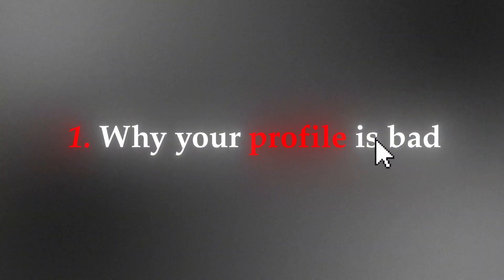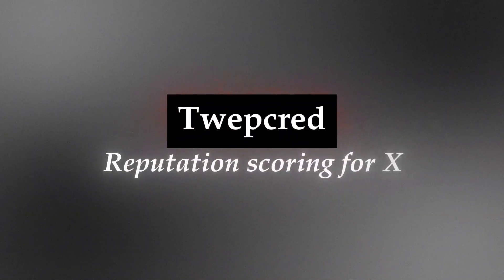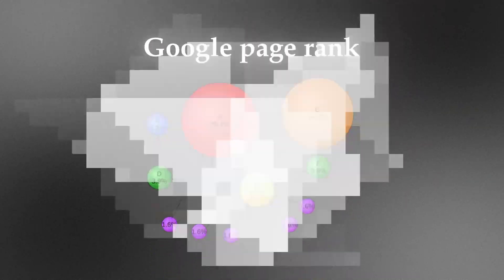The first step is why your profile is bad. Why do some tweets do better? Anyone that's posted has probably seen someone's tweet and thought if I posted that it probably wouldn't get the same engagement. You're not crazy — there is some truth to this. There's something called TweetCred, which is basically a reputation scoring system for X, very similar to Google's PageRank.